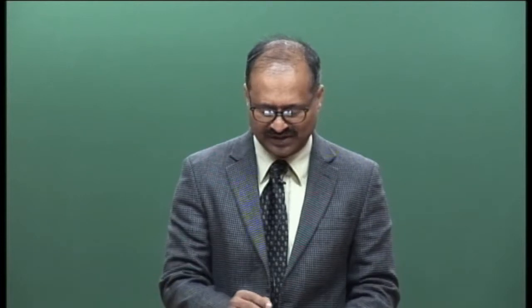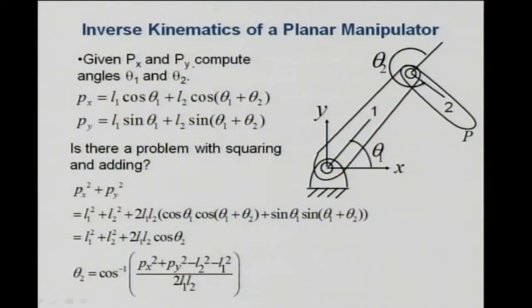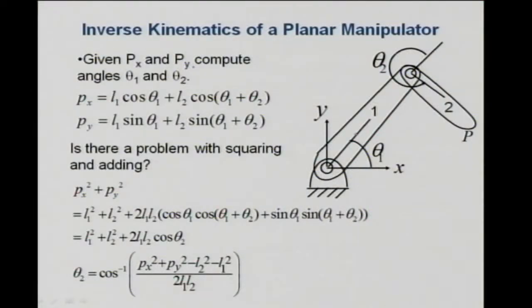If you square and add, things simplify: cos²theta + sin²theta = 1. So L1 lands up as L1² and the L2 term as L2². You can write theta2 as cosine-inverse of Px, Py, and so on. So far it is pretty much school trigonometry, with the caution that squaring is involved and the DH parameter convention is being used.